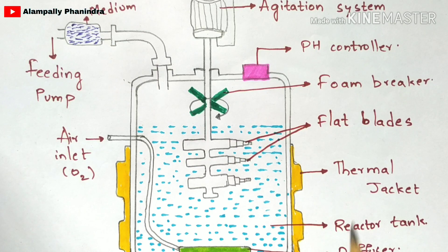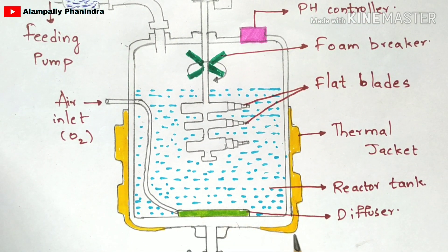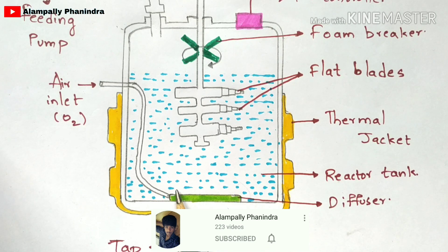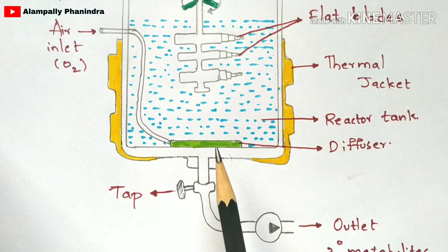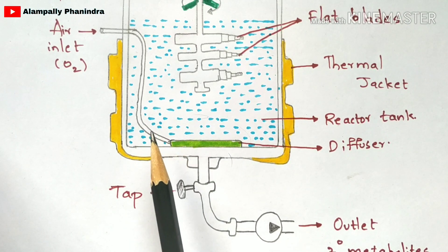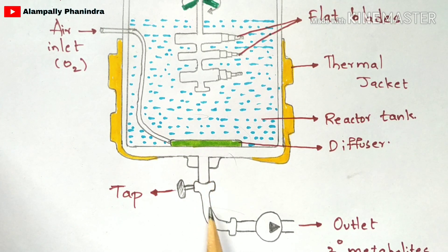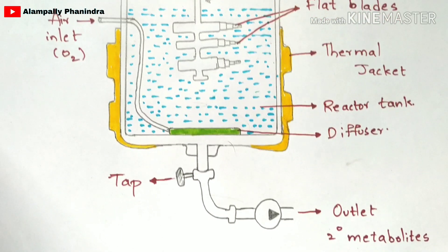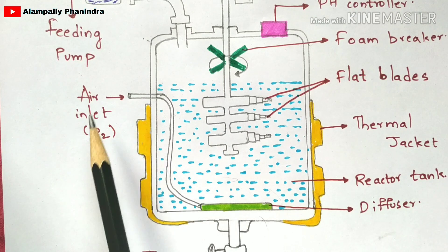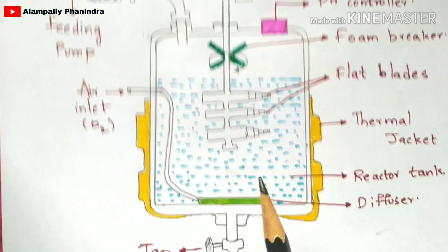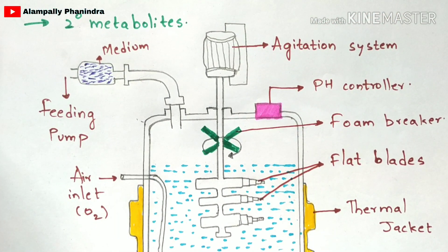The reactor tank is where the reaction occurs — conversion of primary metabolite to secondary metabolite. There is a diffuser and a tap at the bottom. When conversion is complete and secondary metabolites settle at the bottom, you open the tap and the secondary metabolites are sent out through the outlet. There is also an air inlet through which oxygen gas is sent into the bioreactor to ensure proper functioning and production of secondary metabolites.